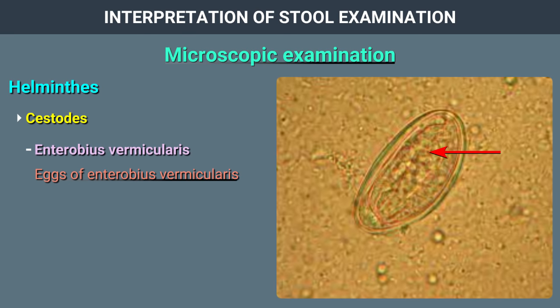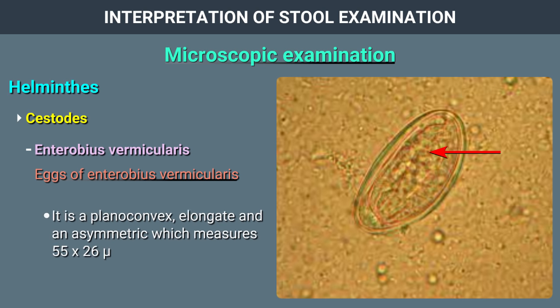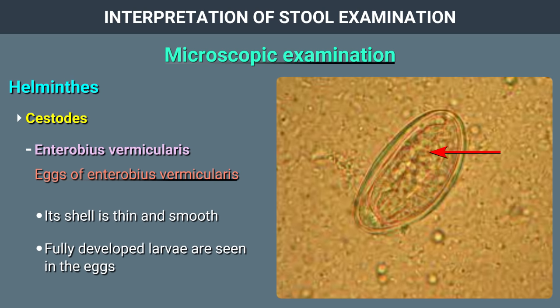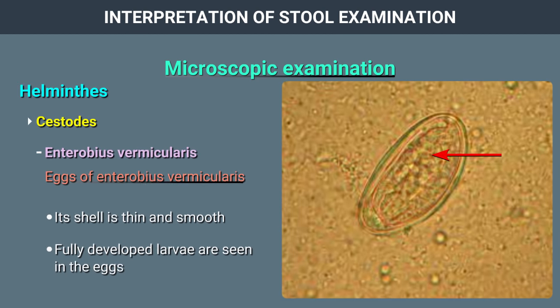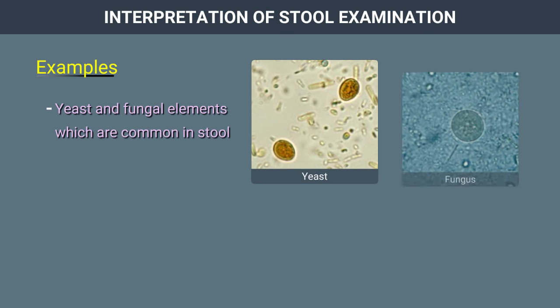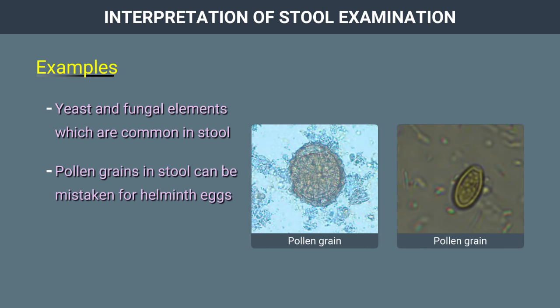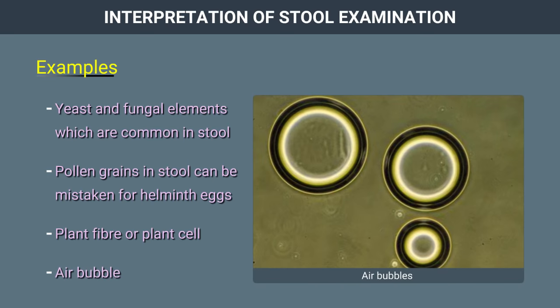Enterobius vermicularis: it is a plano-convex, elongate, and asymmetric egg measuring 55 by 26 microns. Its shell is thin and smooth, and fully developed larvae are seen in the eggs. It is important to recognize artifacts during stool microscopy as they can be confused with ova and cysts of various protozoa and helminths — for example, yeast and fungal elements which are common in stool, pollen grains which can be mistaken for helminth eggs, plant fibre or plant cells, air bubbles, etc.